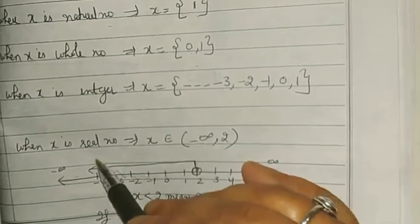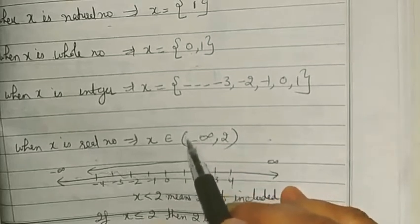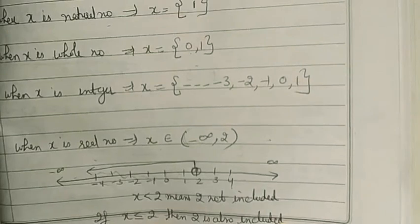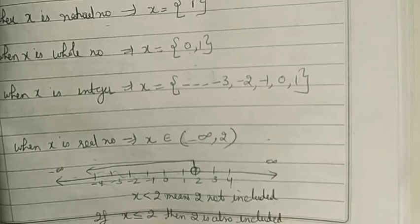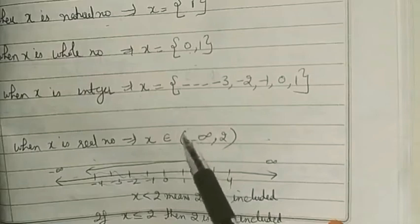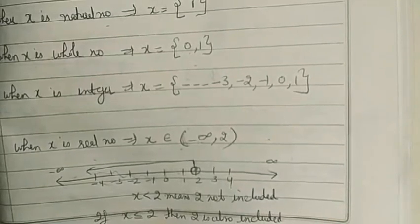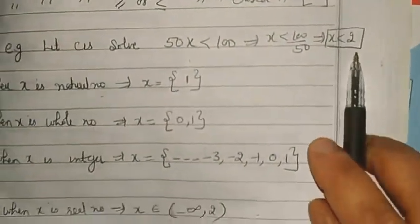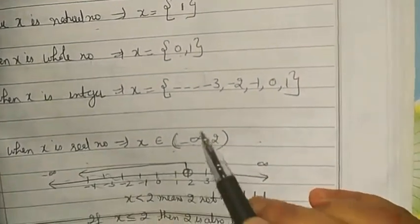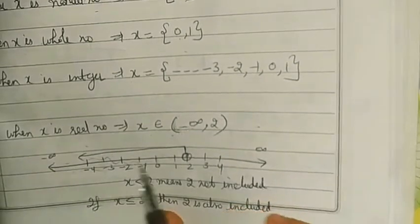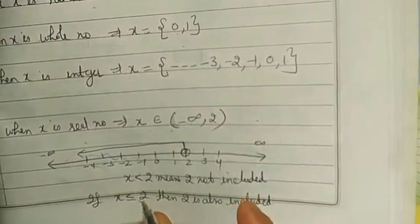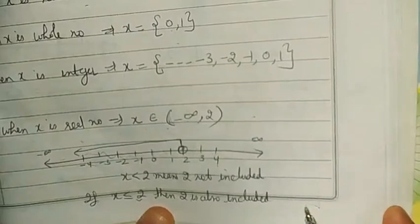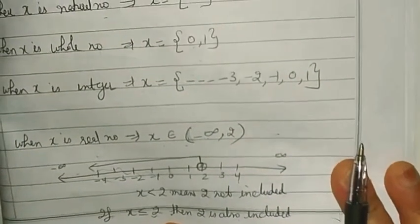Always remember: towards infinity — whether minus infinity or plus infinity — the bracket is always open, because infinity is never reachable. For the solution x < 2, since there is no equality, 2 is not included, so we use an open bracket on both sides: (−∞, 2). But if the inequality were x ≤ 2, then 2 is included and you would write (−∞, 2] with a closed bracket on the right side.